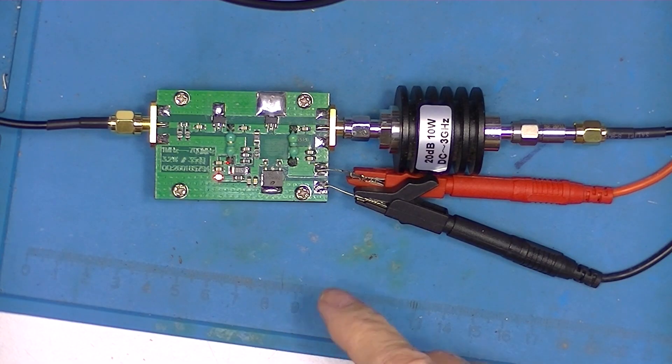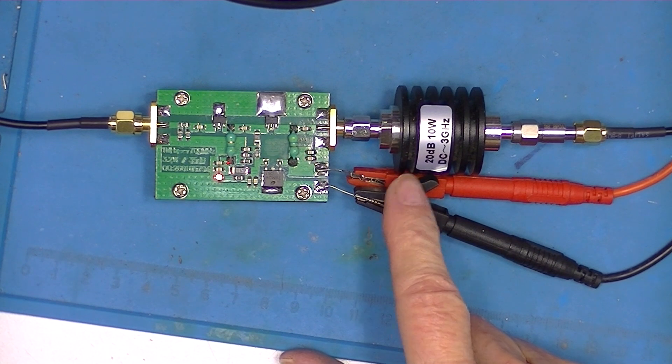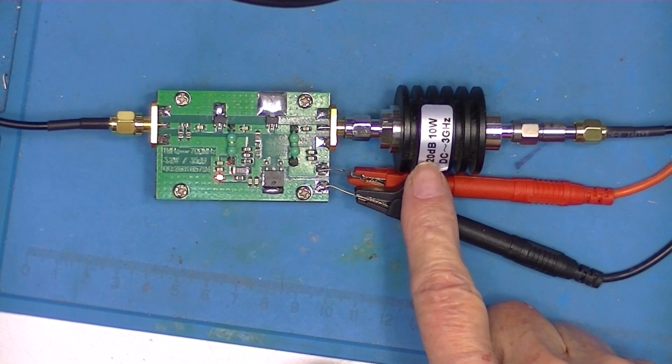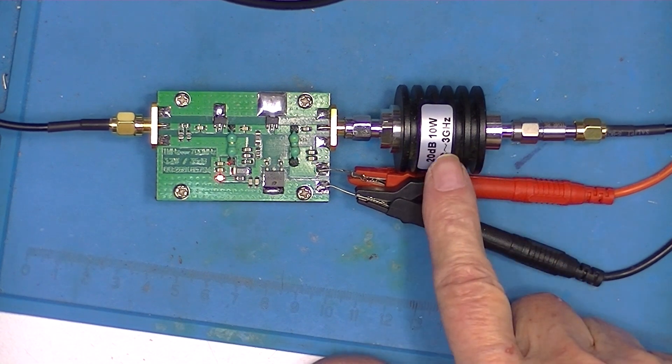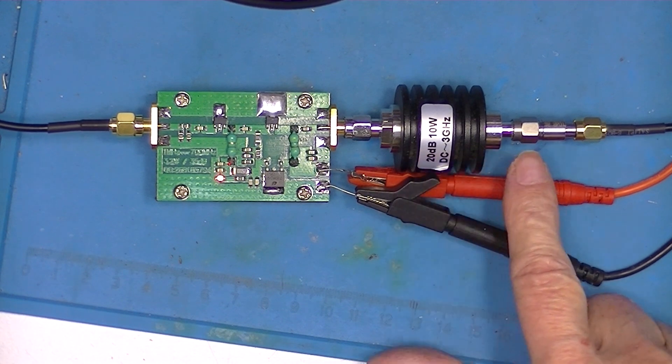The amplifier powered up at 15 volts. It's drawing about half an amp. I've got a total of 30 dB of attenuation hooked to the output: 20 dB and 10.